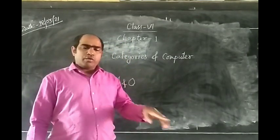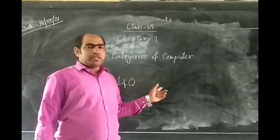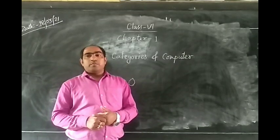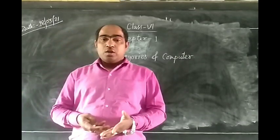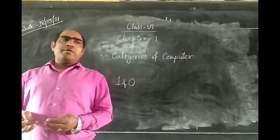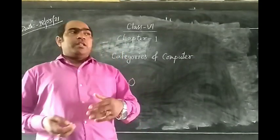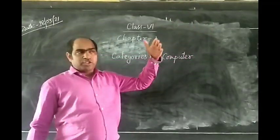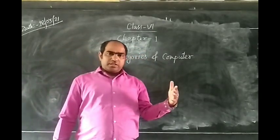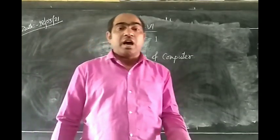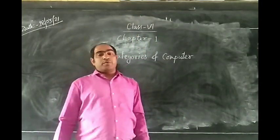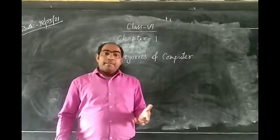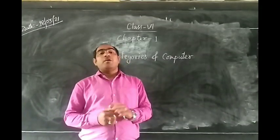These two digits - one and zero - are always counted. These kinds of computers we are using, like desktop and laptop, are digital computers. Now some computers are used for medical purposes - temperature, ECG, blood pressure - that is the analog computer. So we have digital computers, super computers, and more that you will learn in the first chapter.